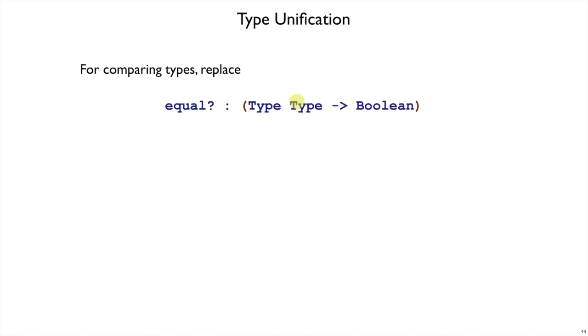But with type variables involved, we no longer want to check whether some type is exactly the same as another type, because the other type might have a variable. Instead we need to replace uses of equal with unify.